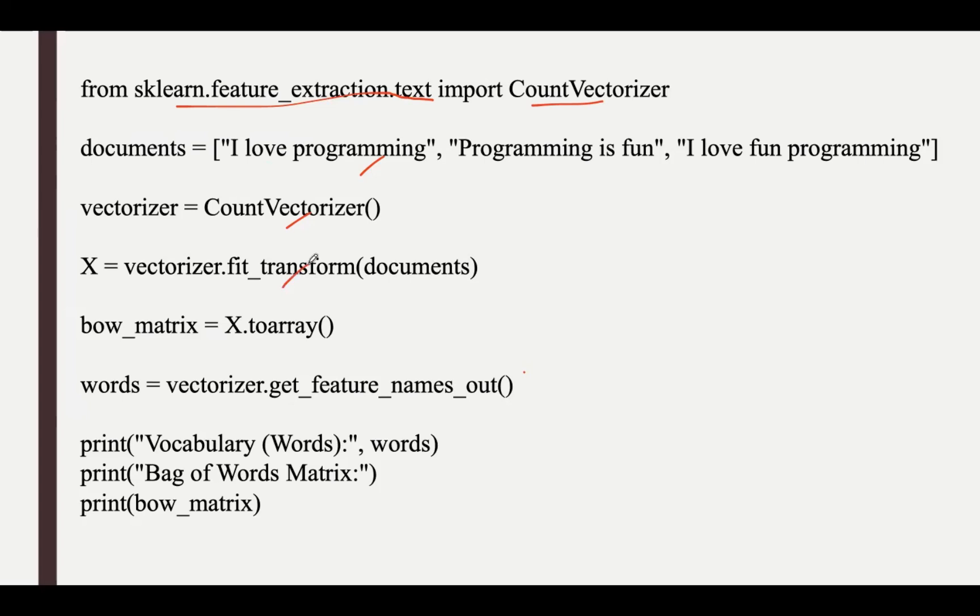The fit_transform is applied to the documents to learn the vocabulary and transform the text into a matrix of word counts. The result X is a sparse matrix, and toarray() converts it into a dense numpy array for easier visualization. get_feature_names_out() gives the words, that is the vocabulary, used in the Bag of Words model. Finally, the vocabulary and the resulting Bag of Words matrix are printed.